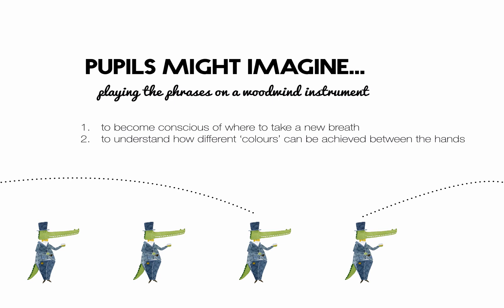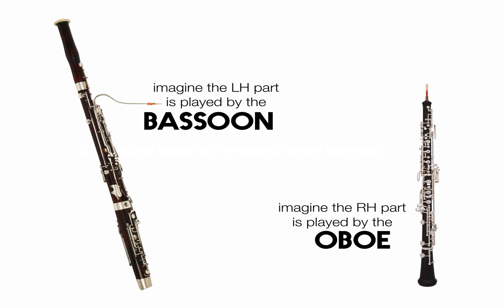The second thing is for pianists to understand how different colours can be achieved between the hands — they might imagine that the oboe player is playing more loudly than the bassoon player and then maybe switching around the roles. The third thing is for pupils to become a little bit more familiar with the timbre of different instruments. I don't give my pupils exposure to the sound worlds of different instruments just as much as I really should. So let's imagine the left hand part of A Little Fable is being played by the bassoon and the right hand by the oboe — I've just got two pictures of what those instruments look like.